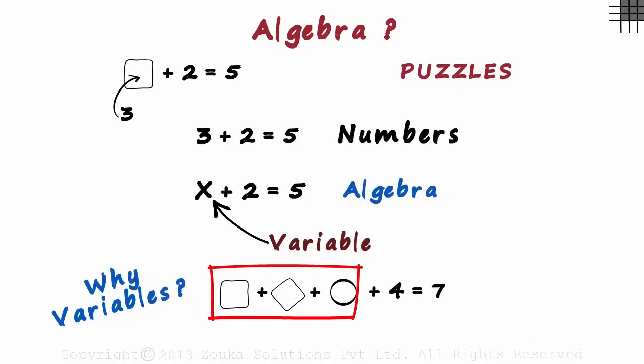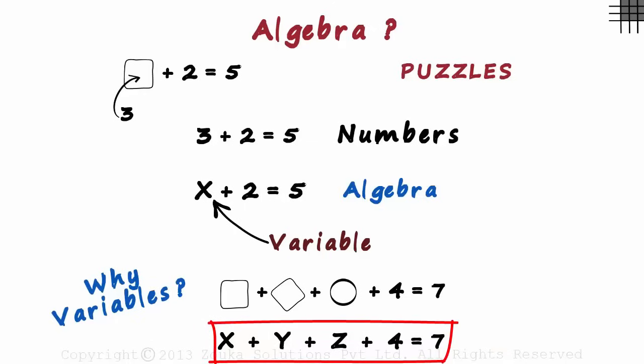Using variables we can write it as x plus y plus z plus 4 equals 7. This was a little more convenient as compared to the previous case. But what's the real advantage of using variables?